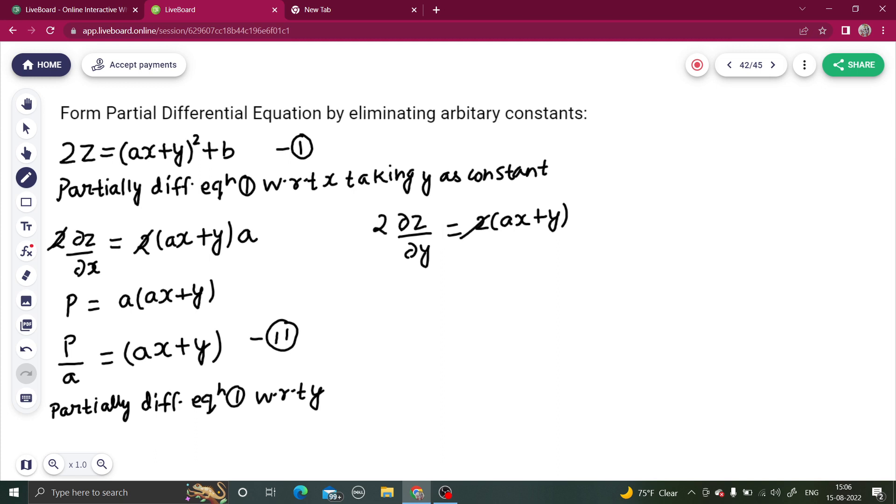So this two gets cancelled. From here you are getting q equals to ax plus y. So you are getting the value of q as ax plus y. Let's name this as equation number three.